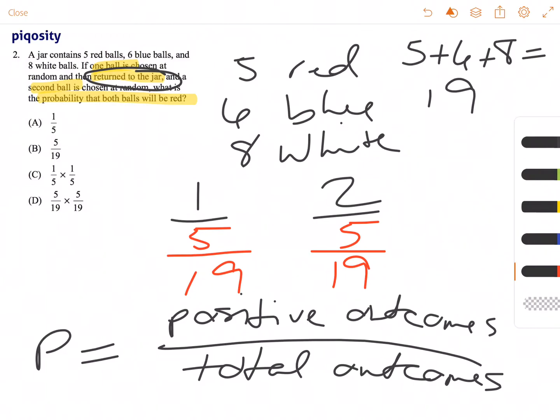Now looking at your answer choices, we actually have a couple that are showing the operation that needs to occur between these two events. Answer choice A doesn't really work because it's just 1 fifth and this doesn't even match any of the probabilities that we have. 5/19 would work if we were only doing one draw from the jar. 5 over 19 can't be reduced to 1 fifth, so C doesn't work.